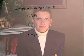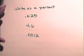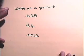Now let's look at some examples of writing a decimal as a percent. In order to write a decimal as a percent, we move the decimal two places to the right and attach a percent sign.